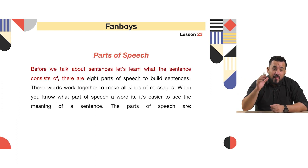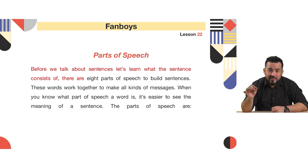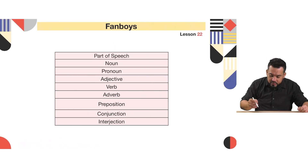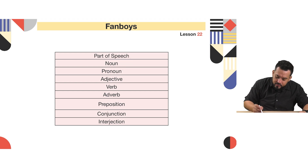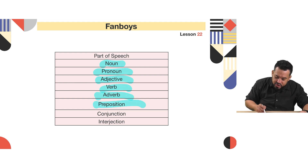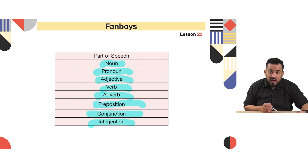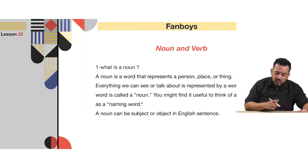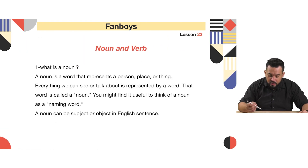In today's lesson we are going to talk about the types of sentences — how many types of sentences are there in the English language. But before we talk about sentences, I want to talk about the parts of speech. There are eight parts of speech in the English language, and they are as follows: noun, pronoun, adjective, verb, adverb, preposition, conjunction, and interjection.